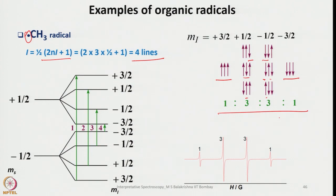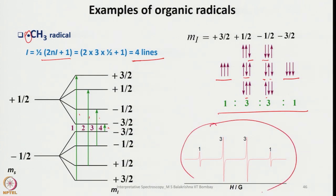This is exactly similar to NMR coupling. You can see the transitions — there are 4 transitions — and we observe the EPR spectrum of the methyl radical in this way. The Mi values are assigned as +3/2, +1/2, -1/2, and -3/2.